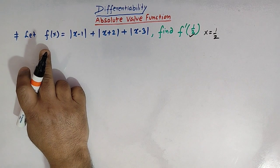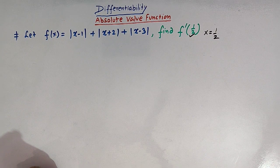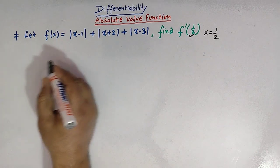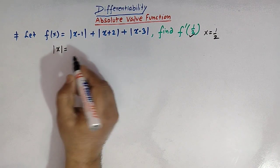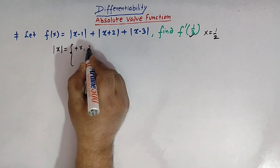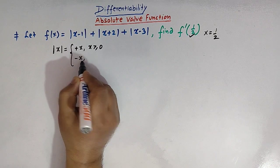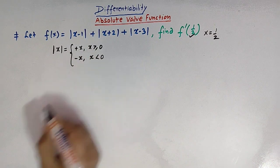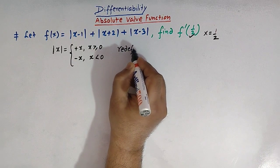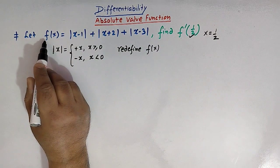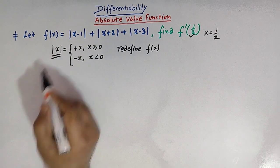Before finding the derivative of f of x at x equal to half, let us first quickly revise the definition of the mod function. The definition says that mod of x takes the value positive x whenever x is greater than or equal to zero, and mod of x takes the value negative of x whenever x is less than zero. We'll use this definition to redefine f of x.